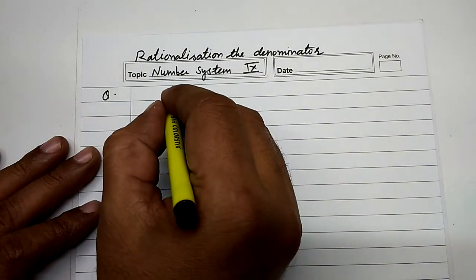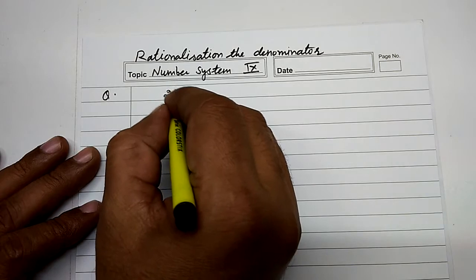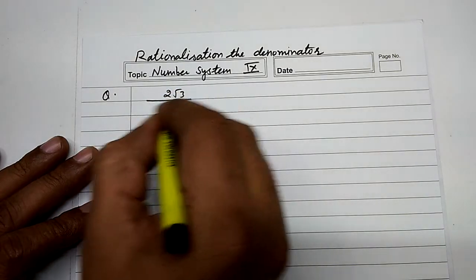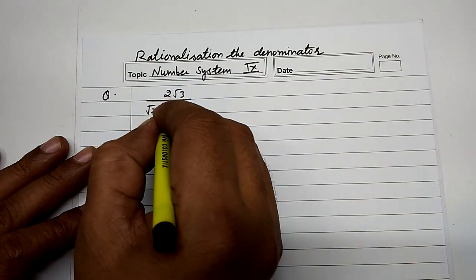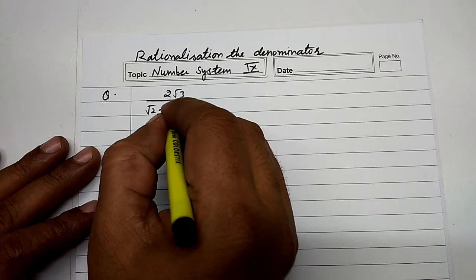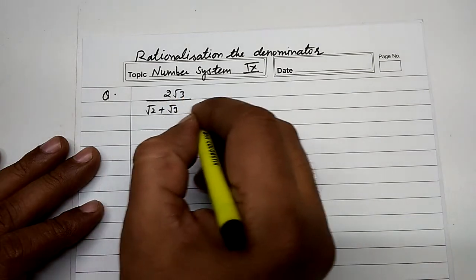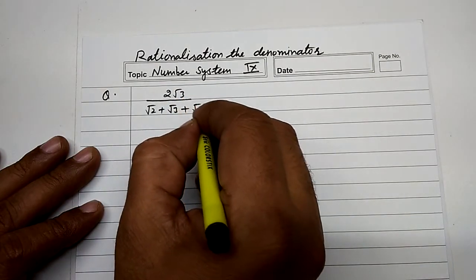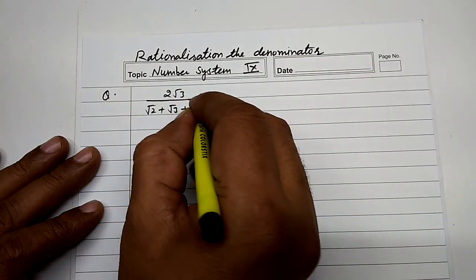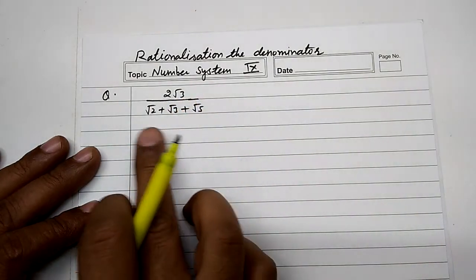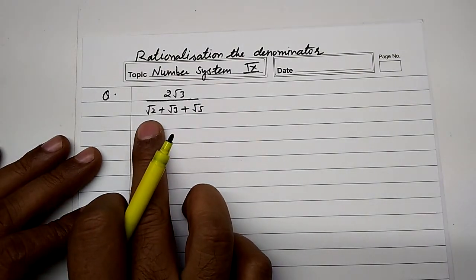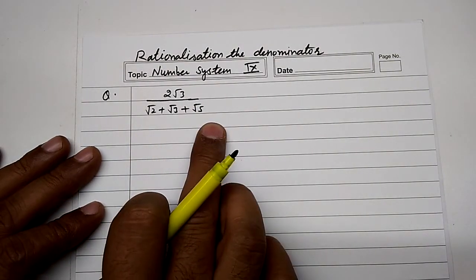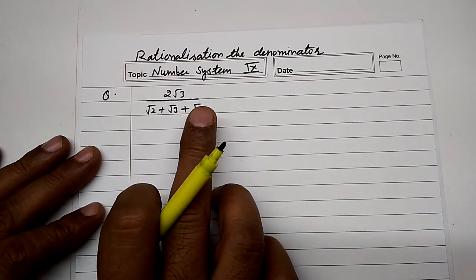Today's question is: 2√3 divided by (√2 + √3 + √5). Here the denominator has 3 terms: √2 + √3 + √5.